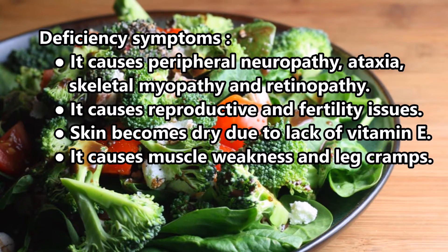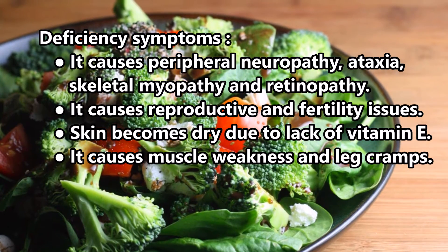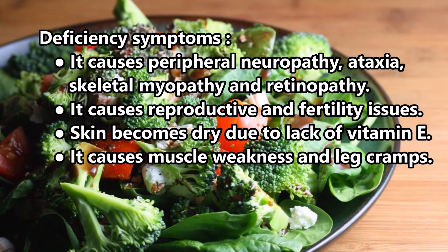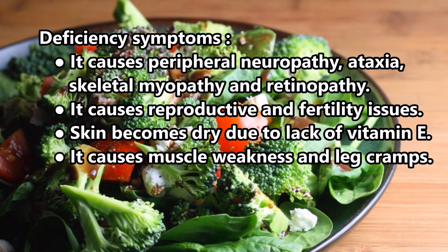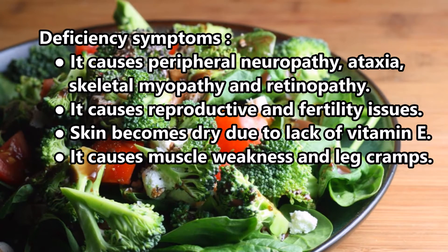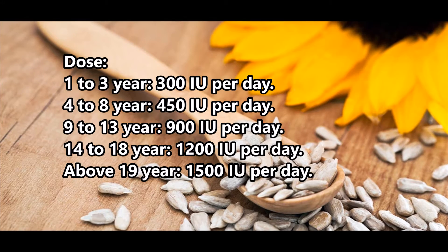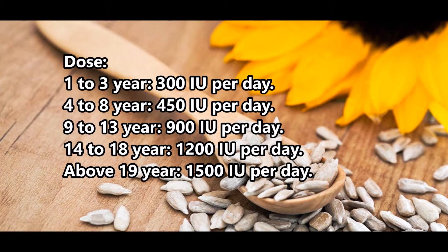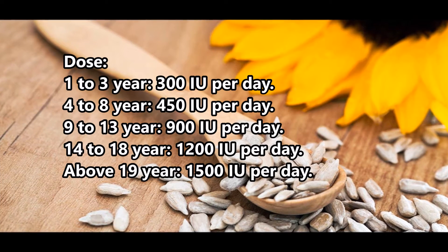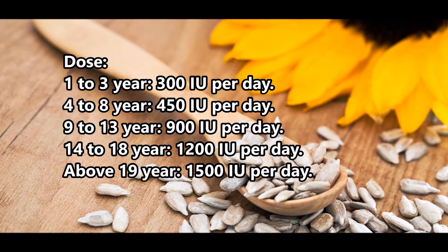Deficiency symptoms: It causes peripheral neuropathy, ataxia, skeletal myopathy, and retinopathy. It causes reproductive and fertility issues. Skin becomes dry due to lack of Vitamin E. It causes muscle weakness and leg cramps.